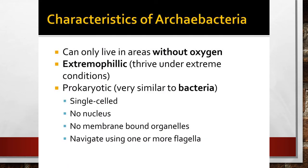Archibacteria can survive in areas without oxygen — they can grow under anaerobic conditions. They are called extremophiles because they can thrive under extreme conditions. They are prokaryotic in nature, unicellular, and without a nucleus — what we call a nucleoid. There are no membrane-bound organelles like mitochondria, endoplasmic reticulum, or Golgi complex, which are found in eukaryotic cells.